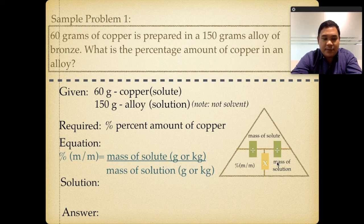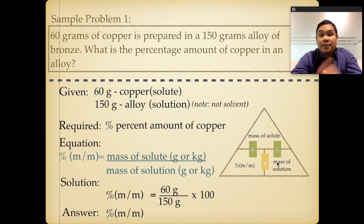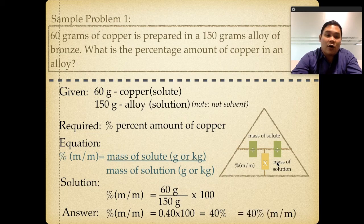Plugging into the formula: percent m/m equals 60 grams divided by 150 grams, times 100. That gives 0.40 times 100, which equals 40%. Therefore, the answer is 40% mass over mass.